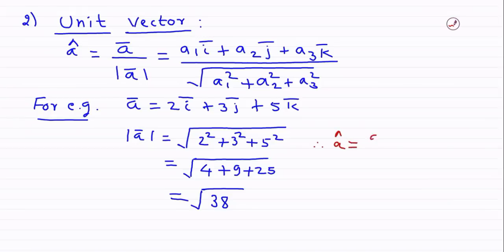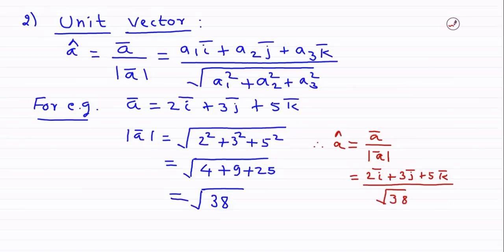Therefore, the unit vector a-cap is given by the vector divided by its magnitude: (2i + 3j + 5k) / √38. If we verify the magnitude of this unit vector, we get √((2/√38)² + (3/√38)² + (5/√38)²) = 1, confirming the unit vector always has magnitude 1.